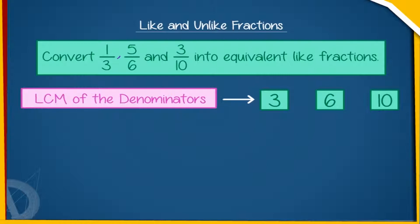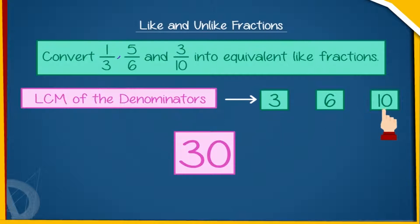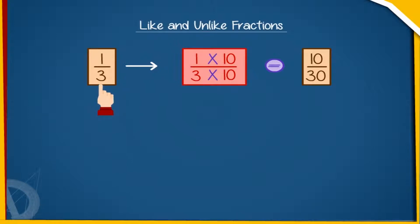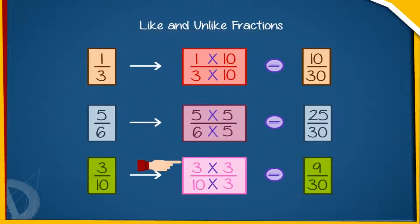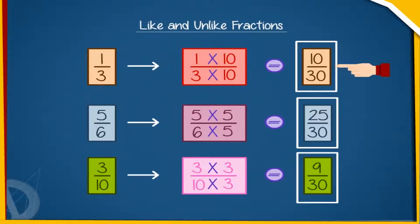First, we will find the LCM of the denominators 3, 6, and 10. We find that the LCM of 3, 6, and 10 is 30. Then, 1 by 3 becomes 10 by 30; 5 by 6 becomes 25 by 30; and 3 by 10 becomes 9 by 30. Hence, the like fractions are 10 by 30, 25 by 30, and 9 by 30.